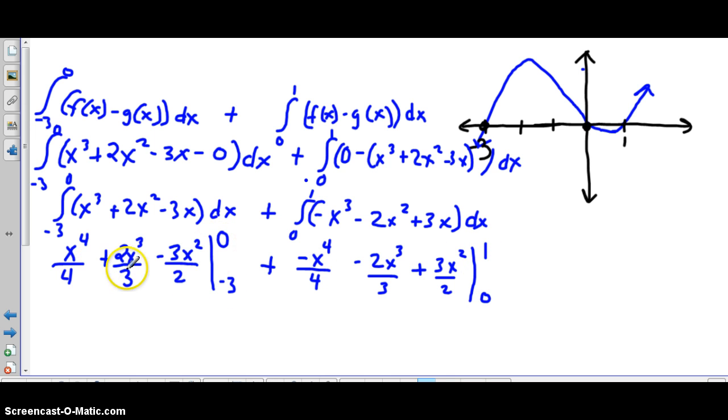We plug in 0 to each of these values and that will result in 0. Then remember you'll subtract your second plug-in. Always the b is plugged in - the antiderivative of b minus the antiderivative of a. We have a minus here and we'll be plugging in all of our values for -3.